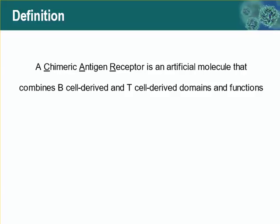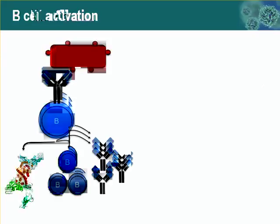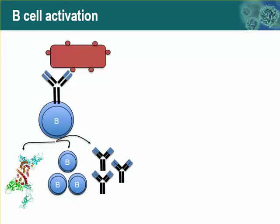You'll recall that a B cell receptor derives its specificity from its variable domains, shown here in blue at the end of the B cell receptor. When the B cell receptor encounters an antigen to which it has sufficient affinity, it can bind directly to this antigen. The B cell can then produce cytokines, that B cell clone can proliferate, and ultimately that B cell can differentiate into a plasma cell which can make soluble antibodies. Antibodies can then double back, and through opsonization, neutralization, or even fixation of complement, cause cytotoxicity against the target positive agent.